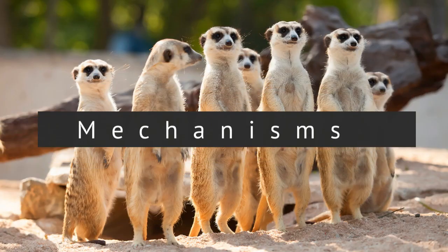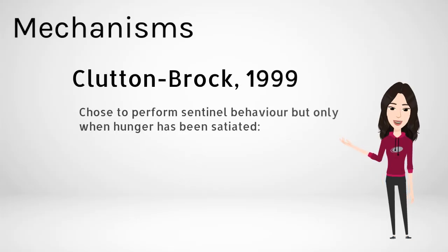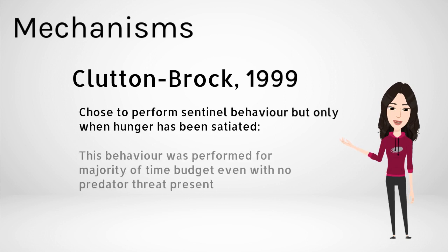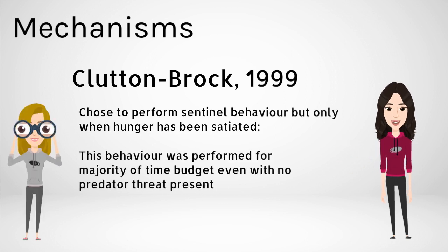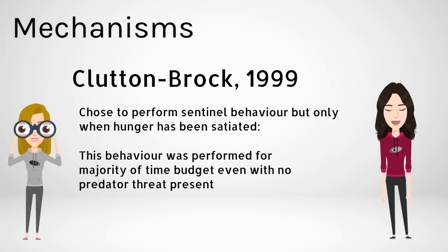Tinbergen's mechanism explains behaviours in terms of what the behaviour actually is and how it's performed. Clutton-Brock in 1999 showed that meerkats chose to perform the sentinel duties and suggested the behaviour was only carried out when they were already full from foraging. This was supported by evidence of the meerkats guarding and showing the sentinel behaviour even when the area they habituated was safe from predators, and the majority of their time budgets were spent guarding regardless of threat presence. Therefore, the ability to locate and store food could be a main mechanism underlying motivation to guard the community.